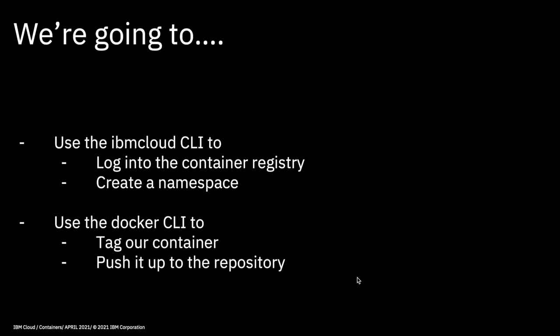In this video, we're going to be using the IBM Cloud CLI. So if you want to follow along, you'll need to have the IBM Cloud CLI installed. What we're going to be doing is logging into the container registry that we've created in an earlier video, creating a namespace within that container registry, rebuilding the Docker container, tagging it, and then pushing it up to the repository so that it's ready to deploy to Kubernetes.